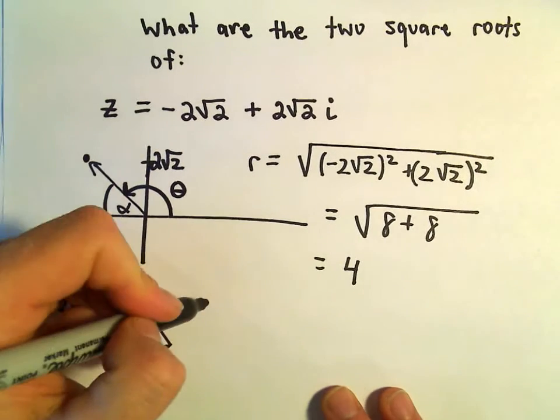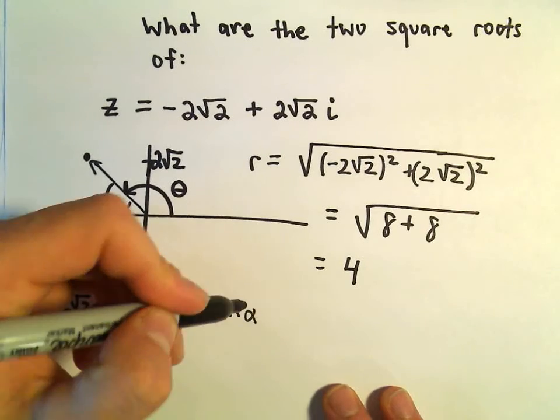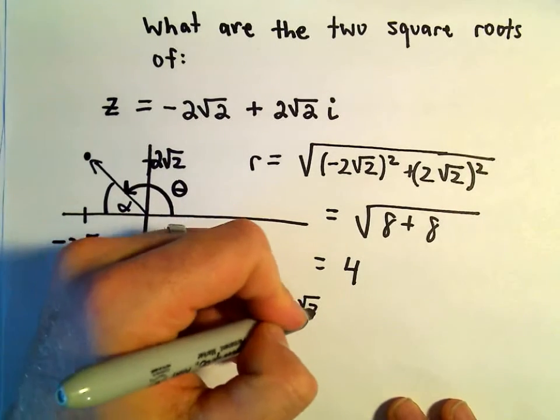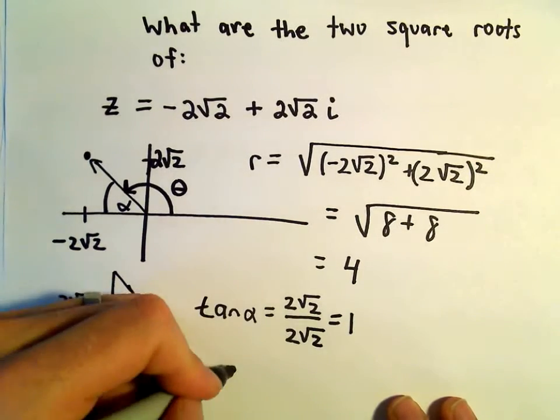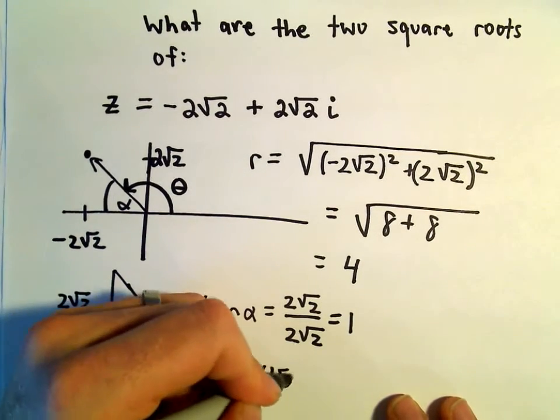So if we use tangent, tangent would be opposite over adjacent, so 2√2 over 2√2, which is just going to give us 1. So in this case, alpha would be 45 degrees.